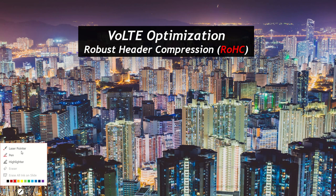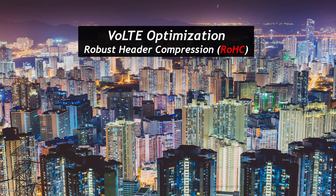Today in the second VoLTE optimization session we'll talk about a very important feature: Robust Header Compression (ROHC). This is very important for VoLTE because, as discussed previously, VoLTE has a very big packet header, so to reduce that header, robust header compression is very important.